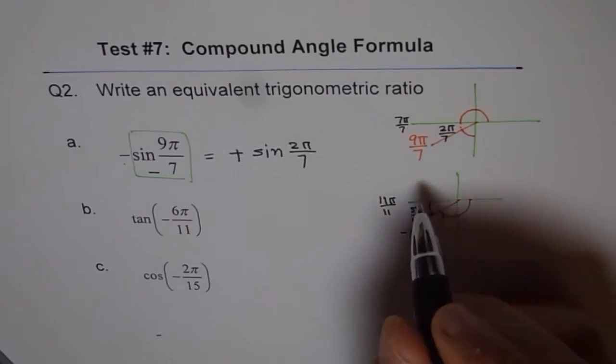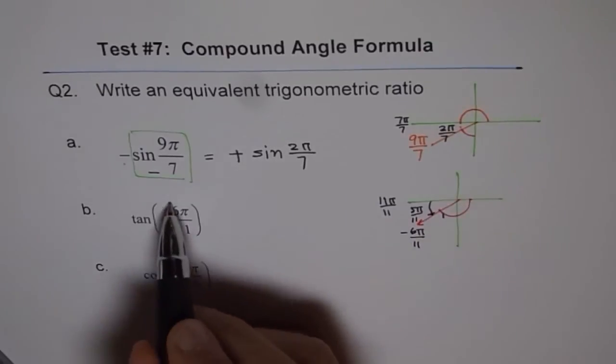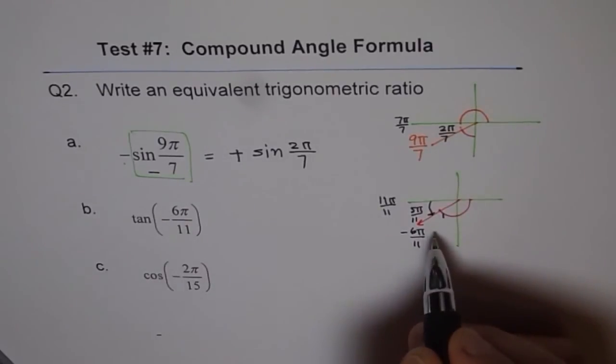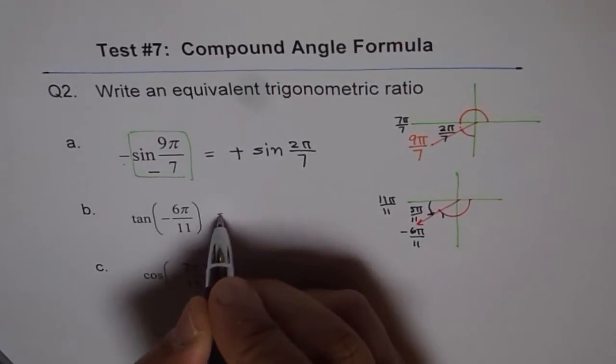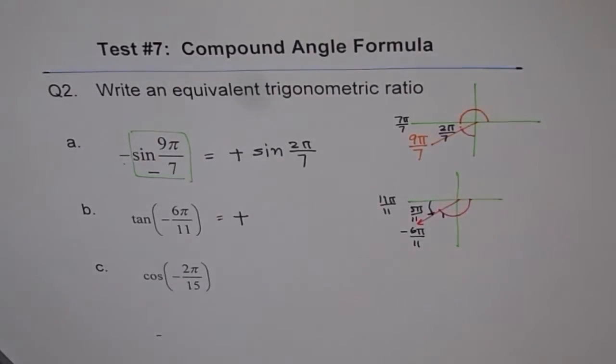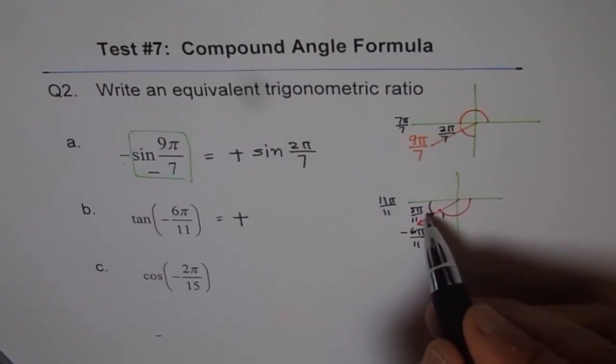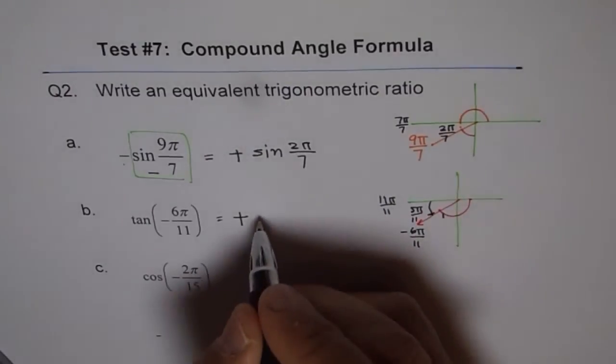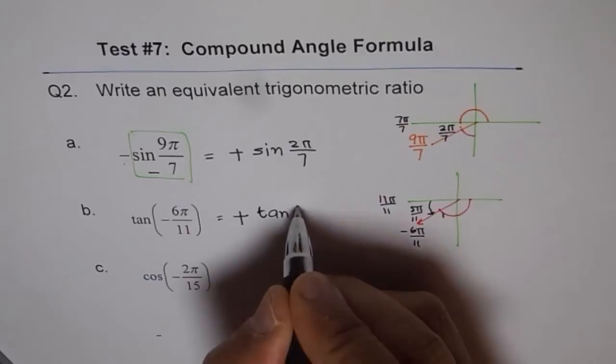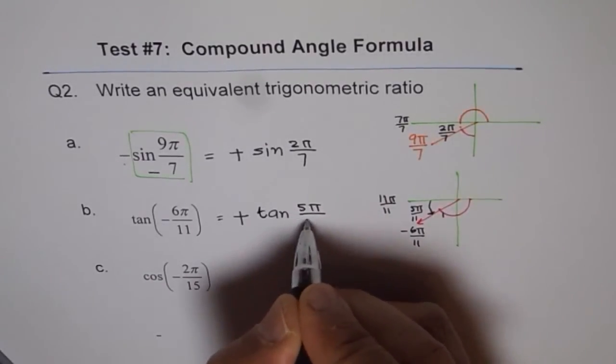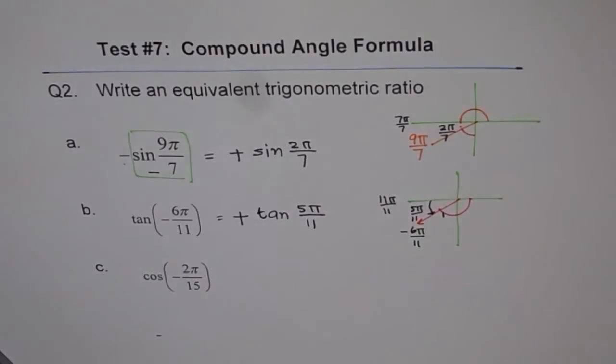Because of this angle, you land in quadrant 3. And tan is positive in quadrant 3. Therefore, you expect a positive value. So we get a positive answer. And the related acute angle is 5π by 11. So we could write this as tan 5π by 11. It's easy. It's becoming easier and easier for you.